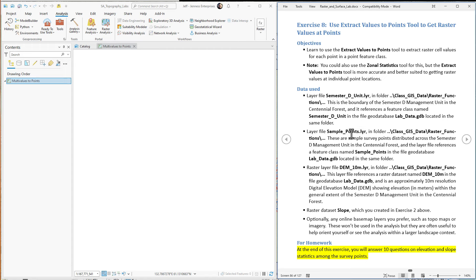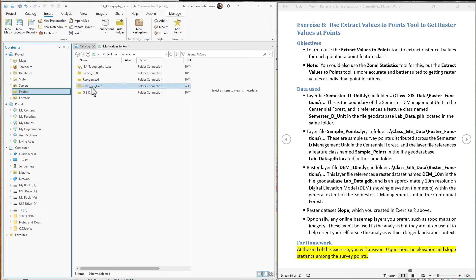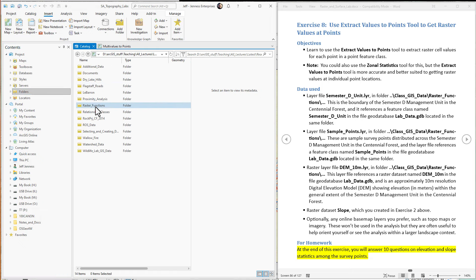That's also in this raster functions folder. So let's add all these up. We're going to do the semester D unit, the sample points, and the DEM from the raster functions folder. That's in our class data. So we go to our class data folder. It's in the raster functions folder.